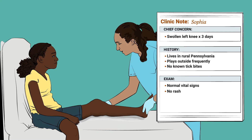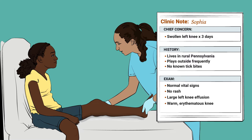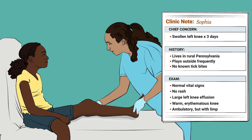Sophia's doctor examines the left knee and notes a large effusion, limited range of motion, and associated erythema, warmth, and mild tenderness. Sophia can still ambulate, but with a limp.